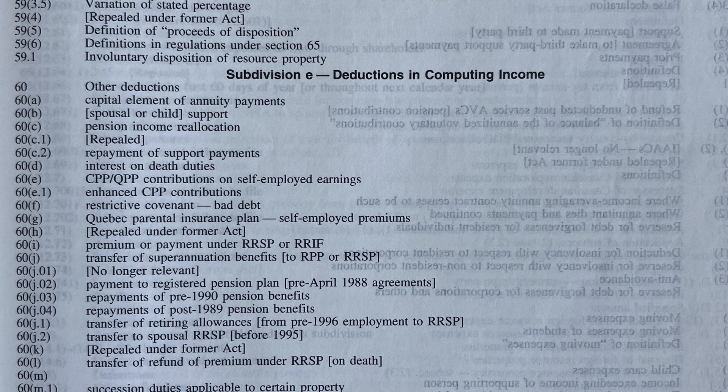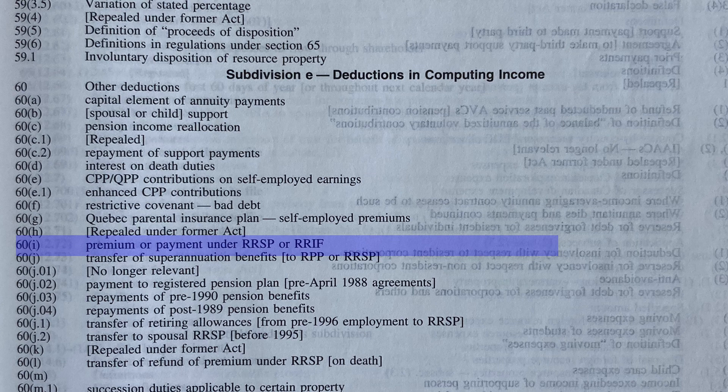For example, if you look at Section 60, Paragraph I, we see premium or payment under RRSP or RRIF. Registered retirement savings plans are definitely something we discuss in taxation. A lot of you probably already know that some of you are eligible to contribute to a savings account, and you can deduct some of that to save taxes.